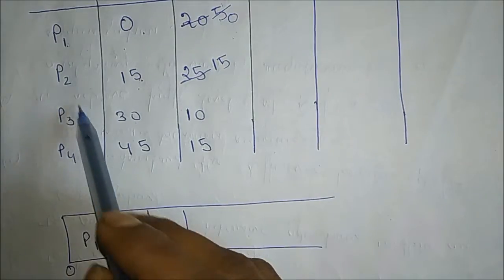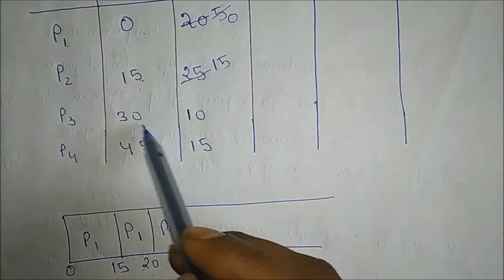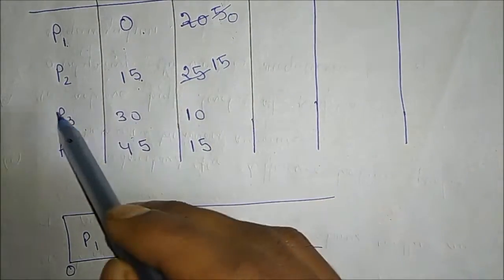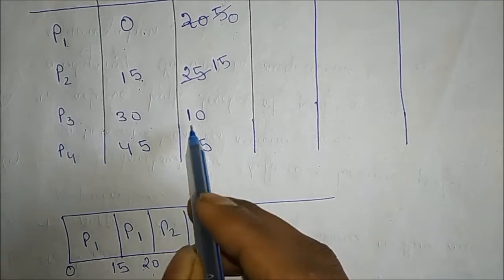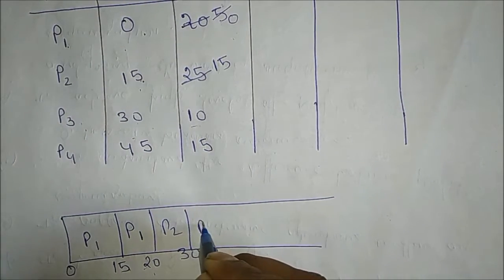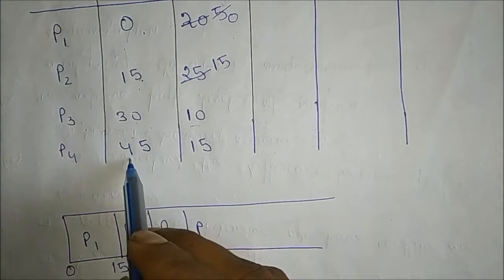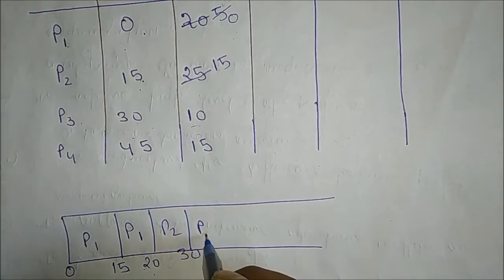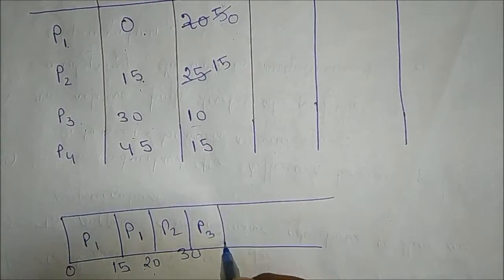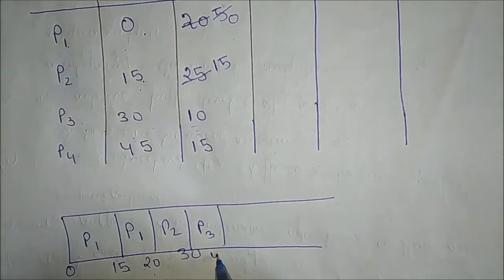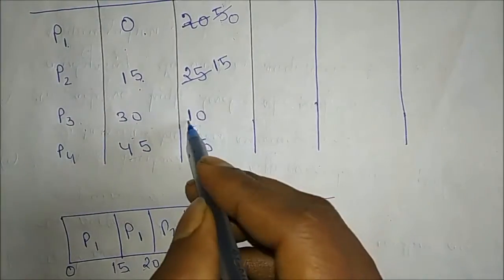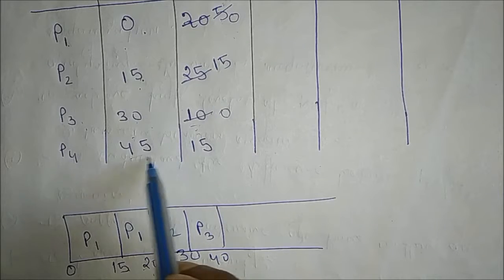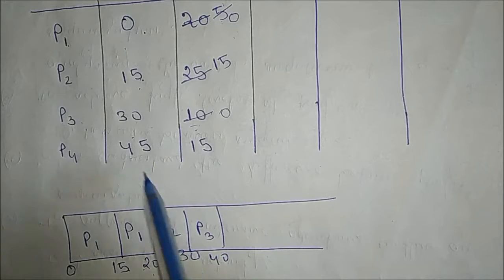P3 has now arrived at time 30 and P2 is also available. We check which has the shortest remaining time. P3 has only 10 units, so P3 is selected. P3 runs for 10 units from 30 to 40 and its remaining time becomes 0. P3 completes at time 40.